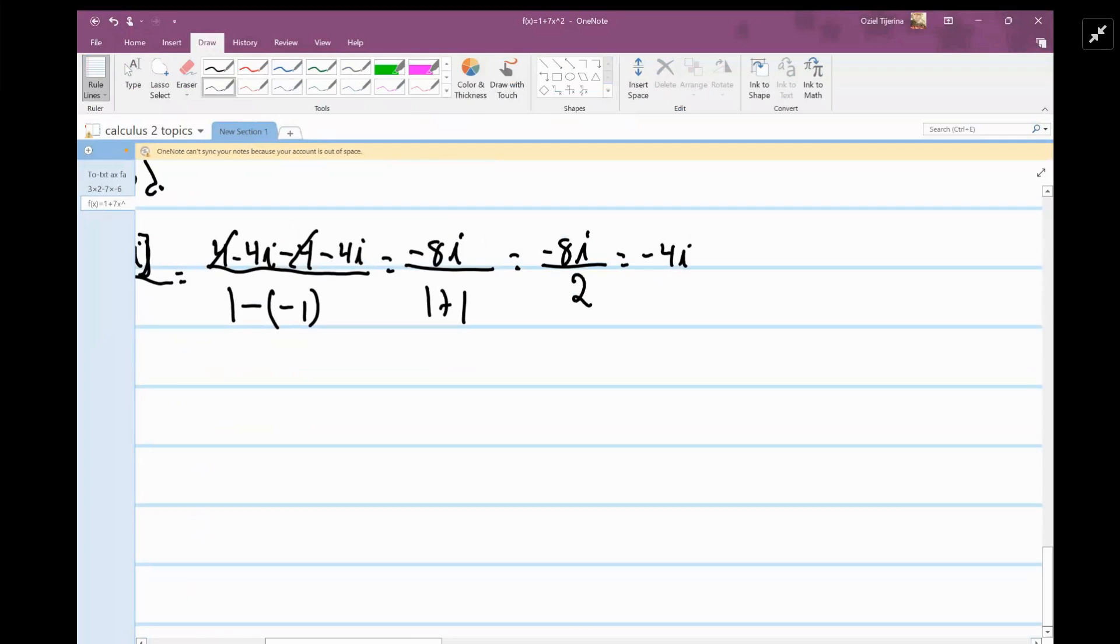Now I don't know if they want you to do it in a plus bi form. You would say 0 minus 4i if they really want it that way. But I would just say negative 4i because that's just, you know, with the 0, it's negative 4i.